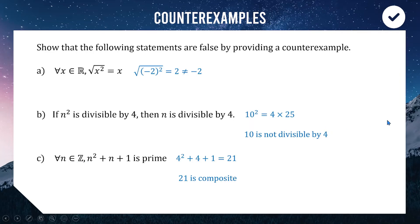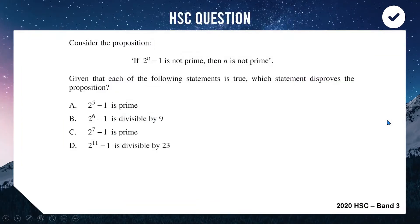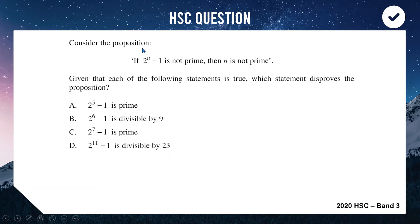Here is an example of an HSC question involving counterexamples. The proposition is: 'if 2^n − 1 is not prime (i.e., composite), then n is not prime.' This is from the 2020 exam — a Band 3 question. Have a think about which one of these four examples, all of which are true, disproves this statement.